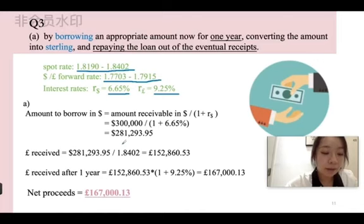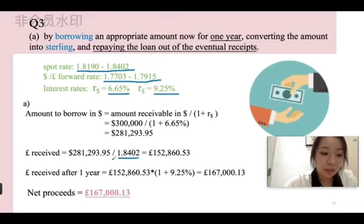This amount is converted into sterling at the spot rate. Sterling received equals the amount just calculated divided by 1.8402, equal to £155,816.53. This ask rate is used because in the given forward rate, sterling is the base currency.